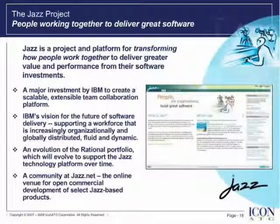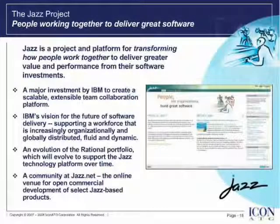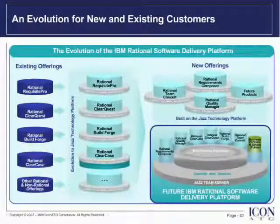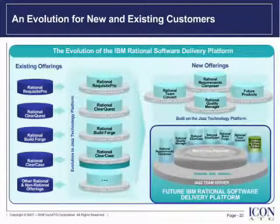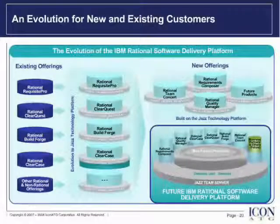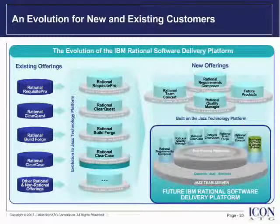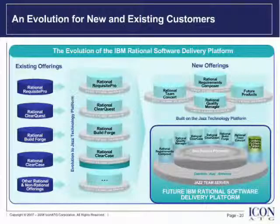Rational solutions built on the Jazz platform will leverage a rich set of capabilities for team-based software development and delivery. IBM's intent is that over time, most existing Rational solutions will be increasingly based on or making use of Jazz technology. Over the next several years, most of the Rational portfolio will evolve to incorporate Jazz technology to improve team collaboration and simplify integration with IBM products and business partners. IBM recently announced that Jazz is open to the global software community, and in total over 20 solutions from IBM and other vendors will be Jazz-enabled by year's end.